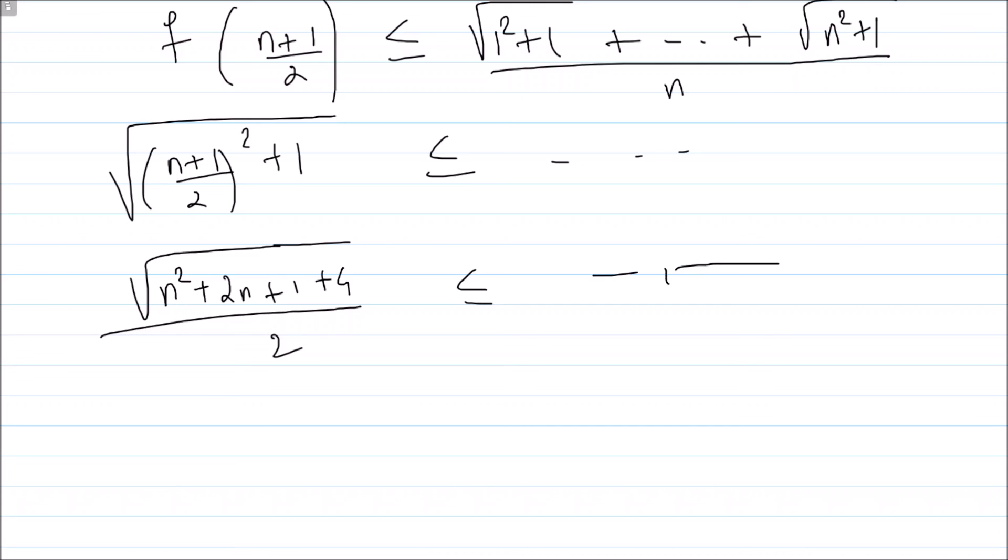Take this denominator n over to the other side, so I have (n/2) times square root of (n² plus 2n plus 5). This is the numerator part.